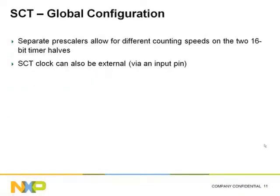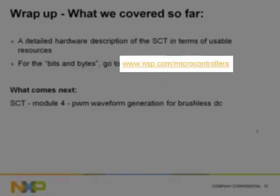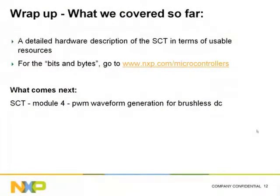At the global configuration level, separate pre-scalers can allow for different counting speeds on each of the two 16-bit timer halves, and the SCT clock can be provided via an external input pin. To summarize, in this module we talked about the resources which the SCT makes available to the programmer. For more details about the register set, addresses, and bit fields, please refer to the user manual available from the NXP website. In the next module, we'll go through an example of using a state machine diagram tool to program the SCT, starting with a simple PWM waveform and extending it to a more complex setup covering the control of a brushless DC motor.